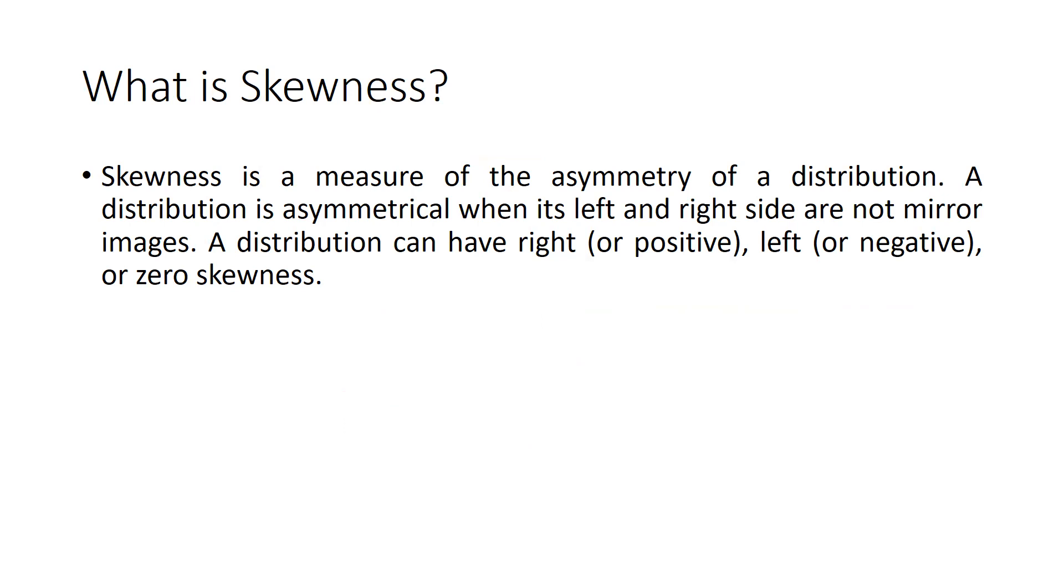A distribution is asymmetrical when its left and right side are not mirror images. A distribution can have right or positive skewness, left or negative skewness, or zero skewness.